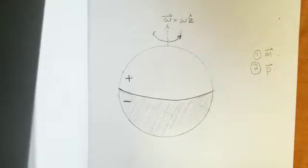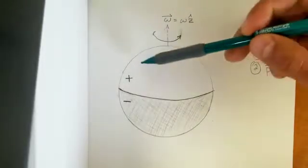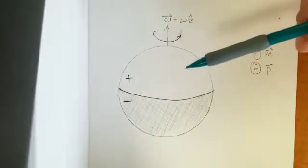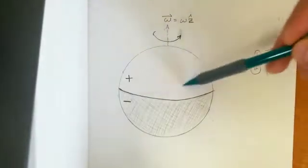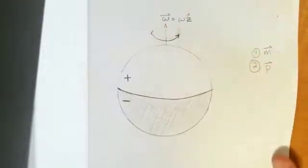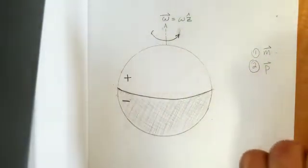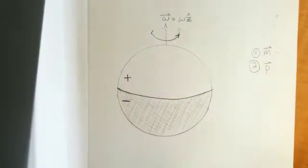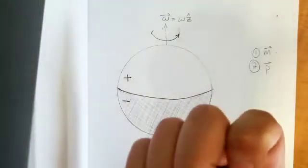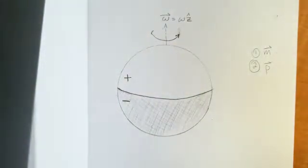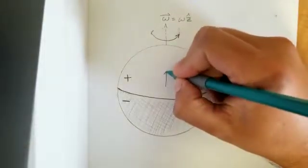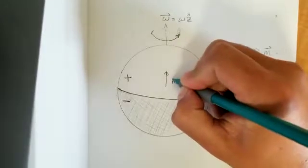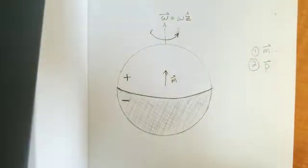First, if we take a look at the magnetic moment, we can see that the top half — the positive half of the sphere — is rotating with an angular velocity in the phi-hat direction. Using the right-hand rule with our thumb as the direction of current, our fingers curl up in the positive z direction. So no matter how we go around, if our thumb follows the direction of the positive charge, our fingers curl around in the positive z direction, meaning our magnetic moment is upwards in the positive z direction.